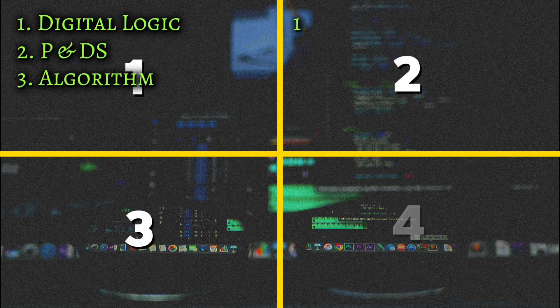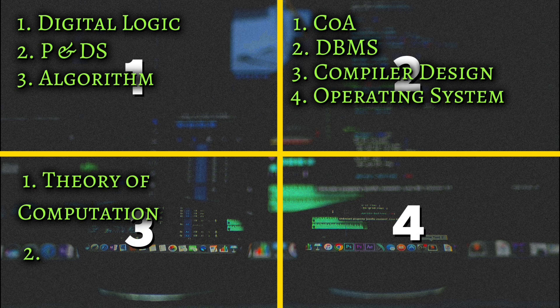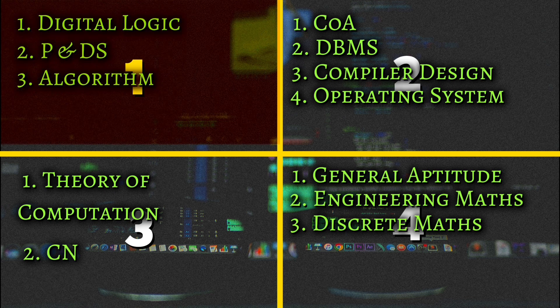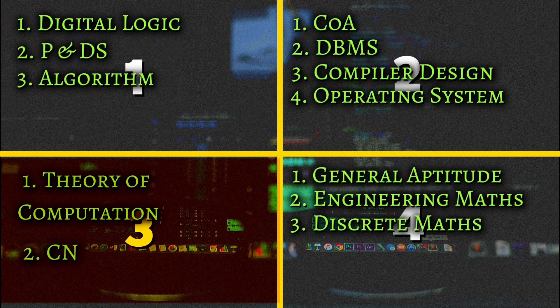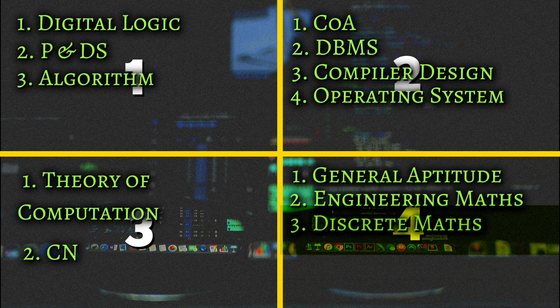I am dividing all required courses for GATE CSE into 4 levels. This division is done very carefully: Level 1 consists of all the basic and simple courses which will create fundamentals for Level 2 and Level 3 advanced courses. Level 3 courses are lengthy, which is why they are separated from Level 2. Level 4 is basically engineering mathematics and aptitude, and GATE CSE mathematics also includes discrete mathematics.